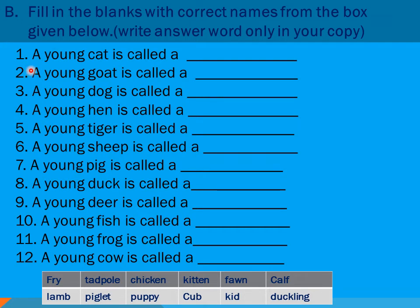Number one: a young cat is called a — there are 12 options provided, so choose one. A young cat is called a — which one do you think is the right answer? Number two: a young goat is called a — which one? The options are: fry, tadpole, chicken, kitten, foal, calf, lamb, piglet, puppy, colt, kid, duckling.